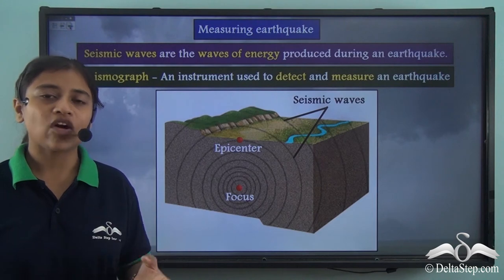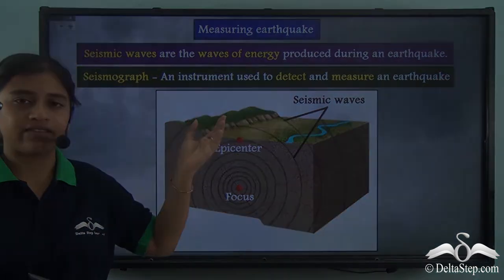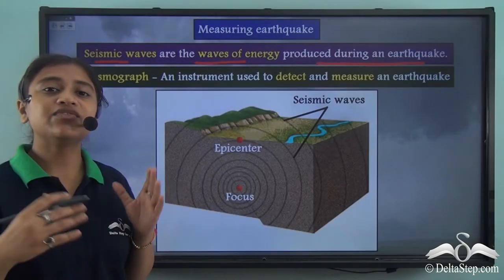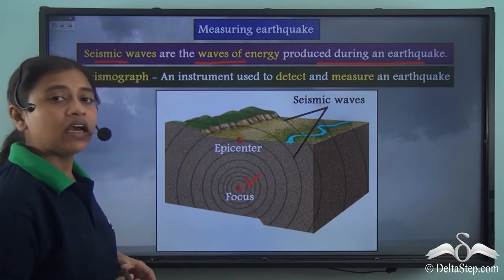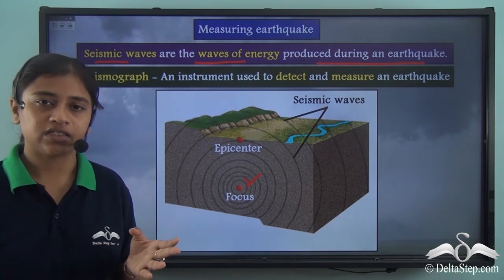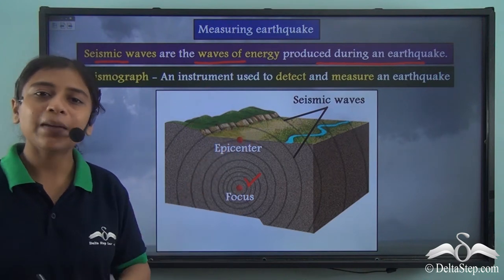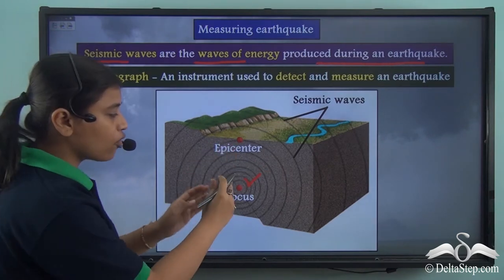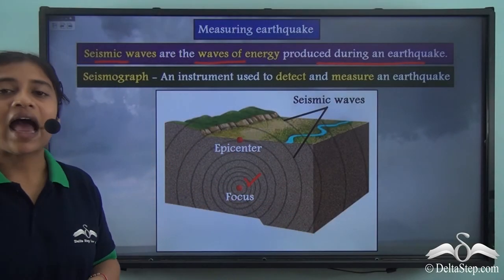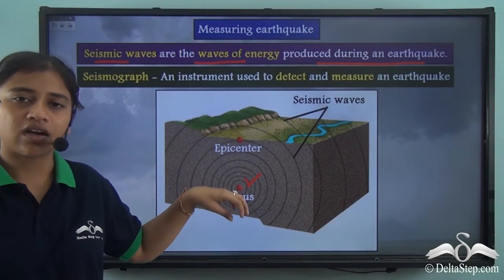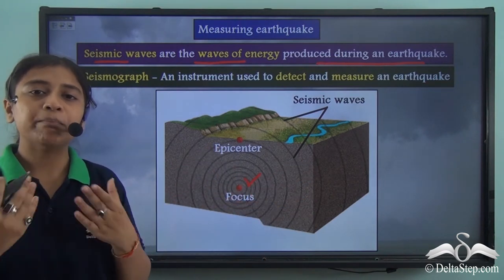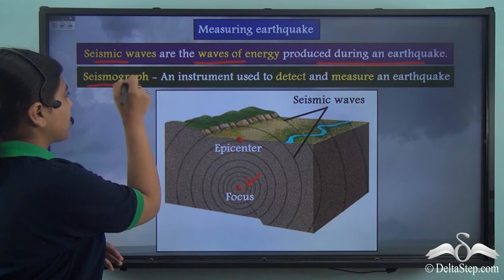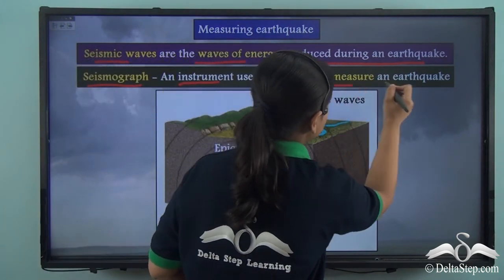To better understand earthquakes, we need to understand seismic waves. Seismic waves are waves of energy produced during an earthquake, released from the focus within the earth's crust where the earthquake originated. Right perpendicular to the focus on the earth's surface is the epicentre — the place where the earthquake is strongest. The seismic waves spread across the surrounding area from the focus. To detect and measure the magnitude and intensity of an earthquake, we use a special instrument called the seismograph.